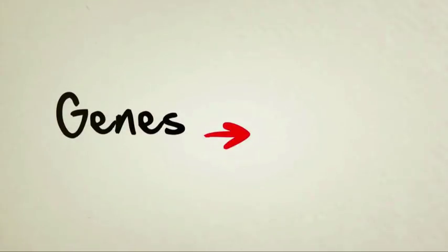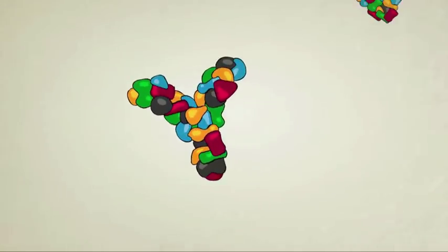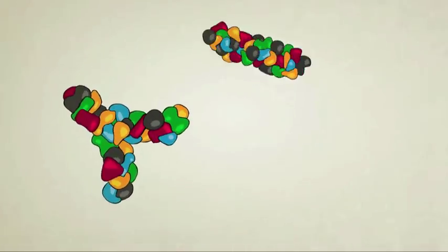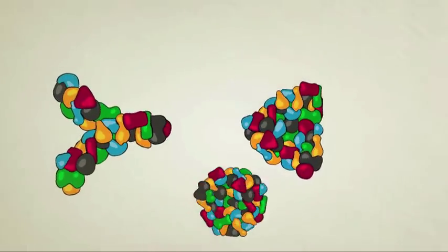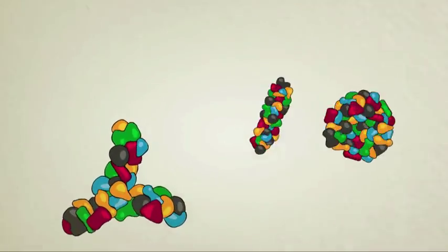Genes make proteins. Those proteins interact with each other and all sorts of chemicals inside the body to build things like eye pigments, freckles, and mood-altering hormones.